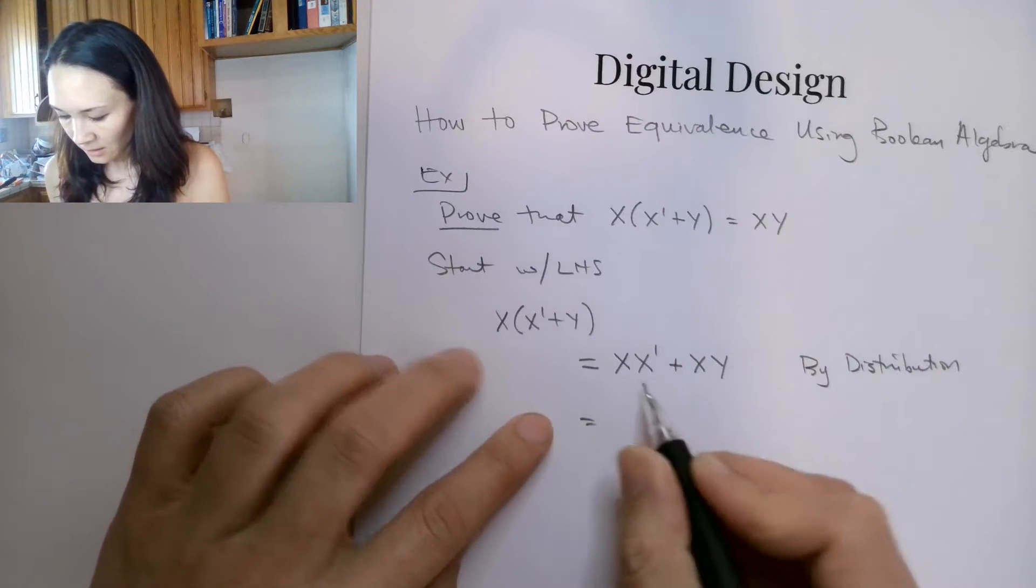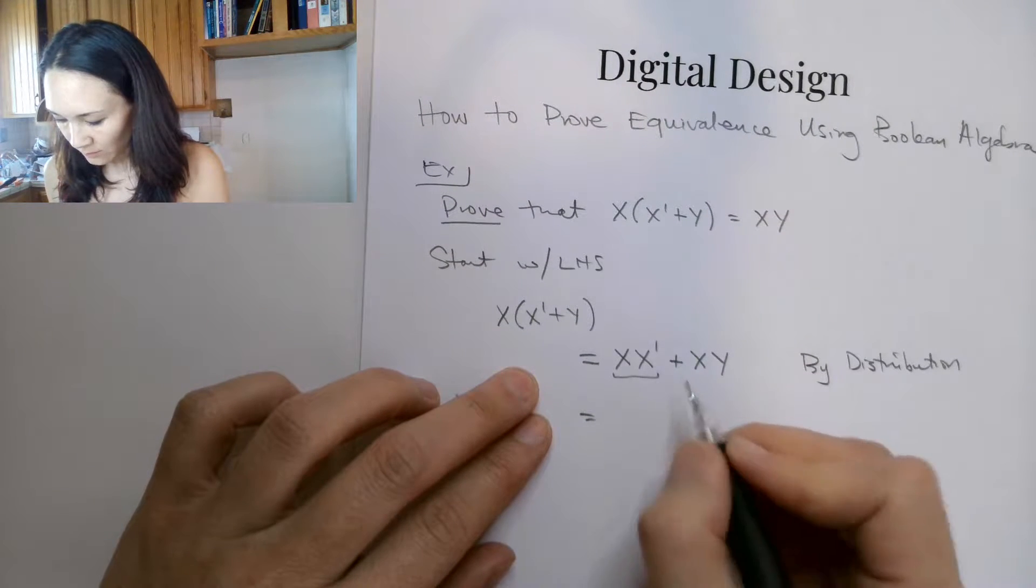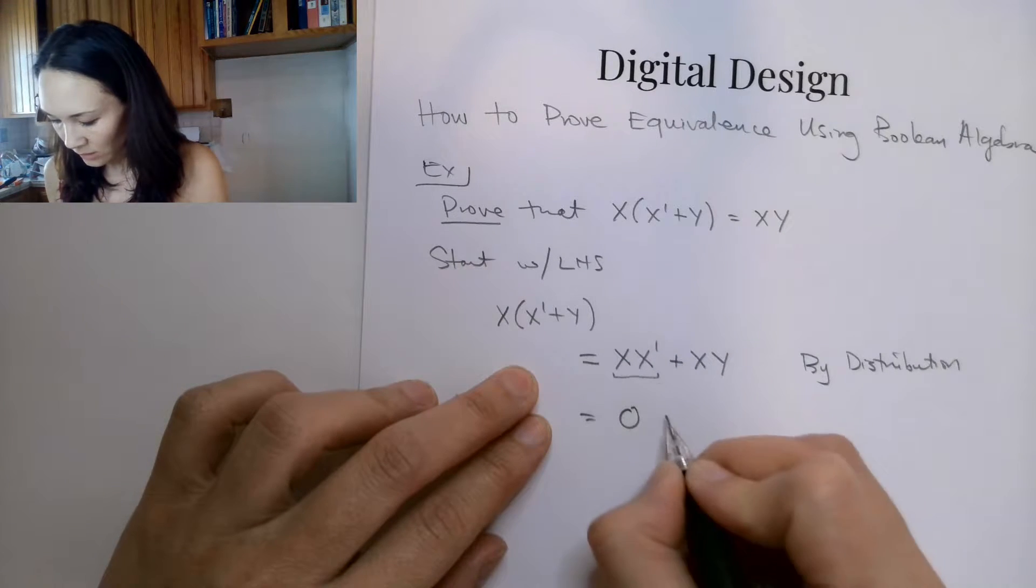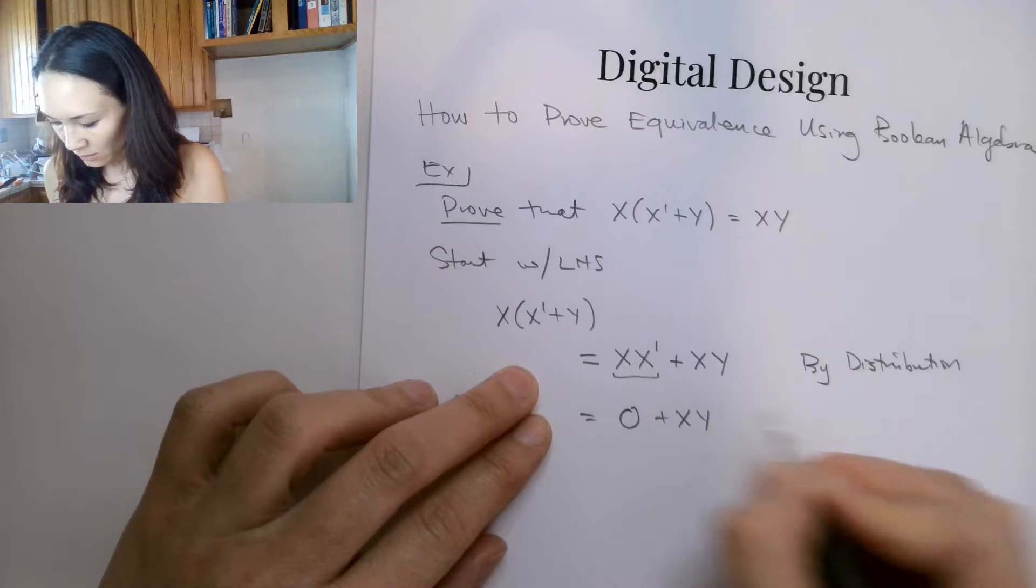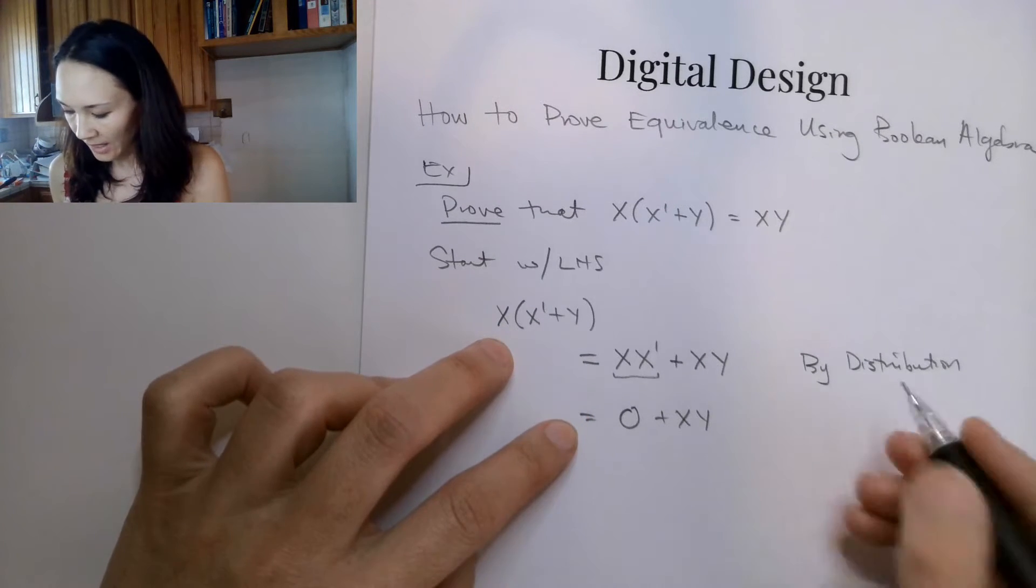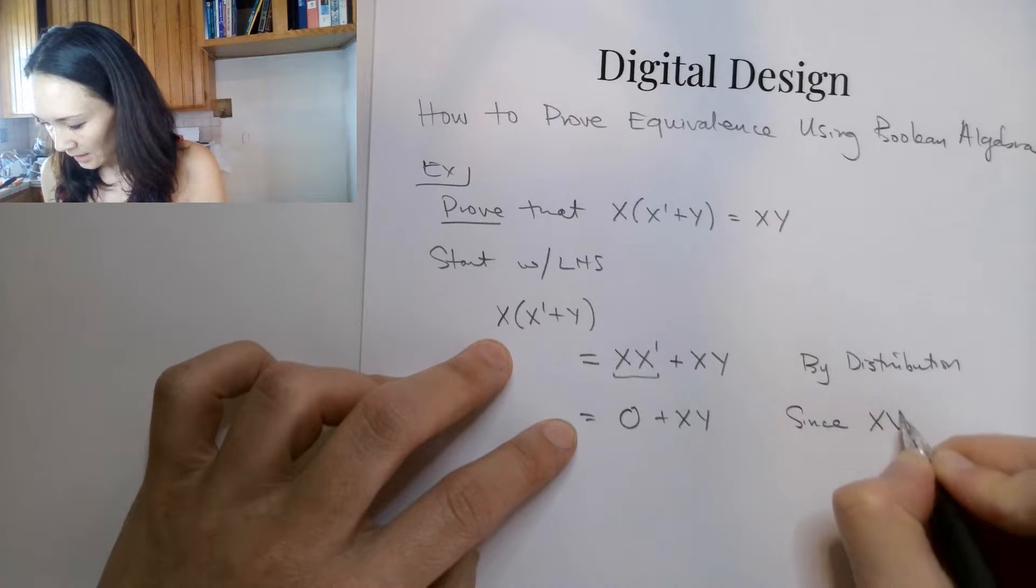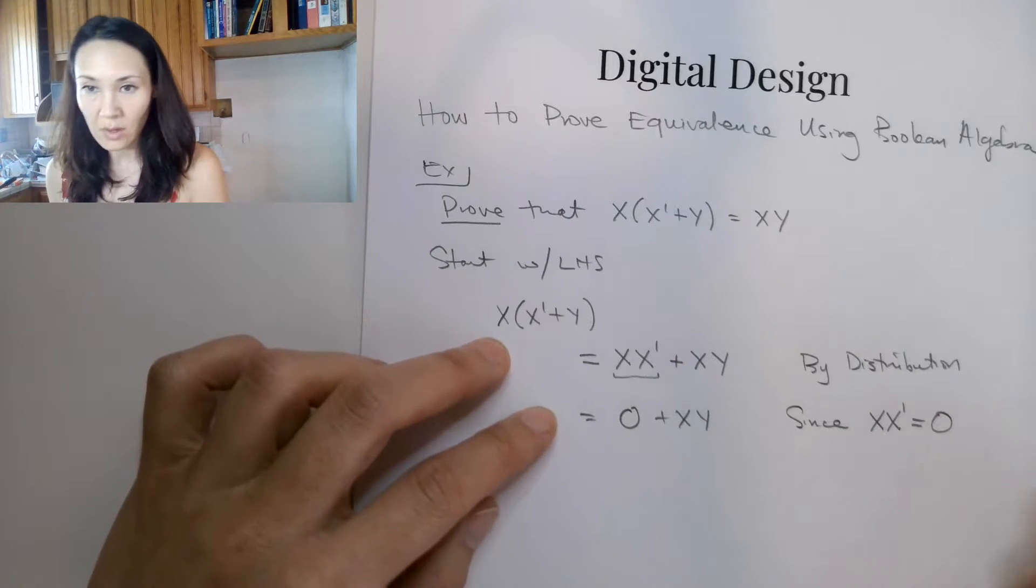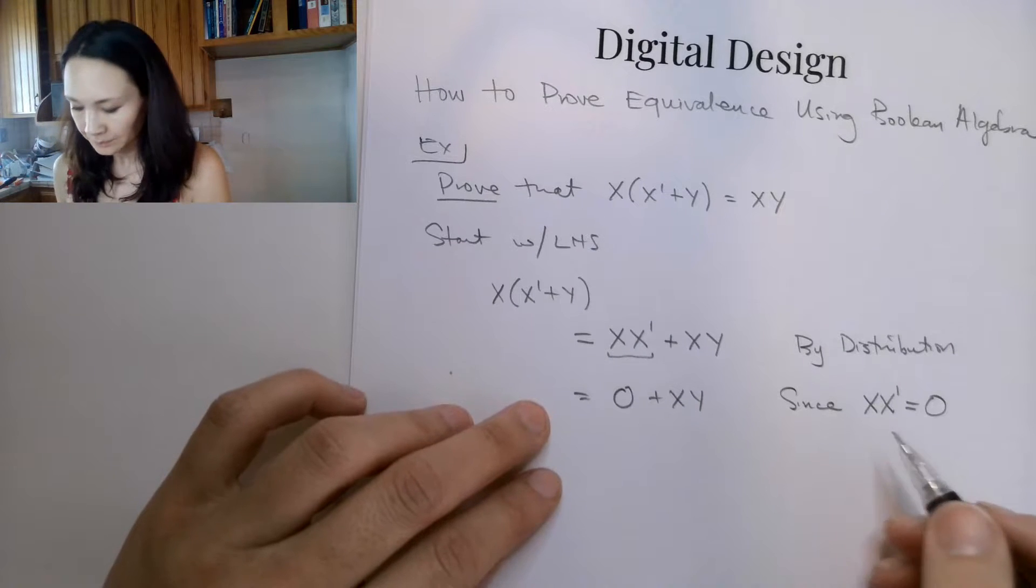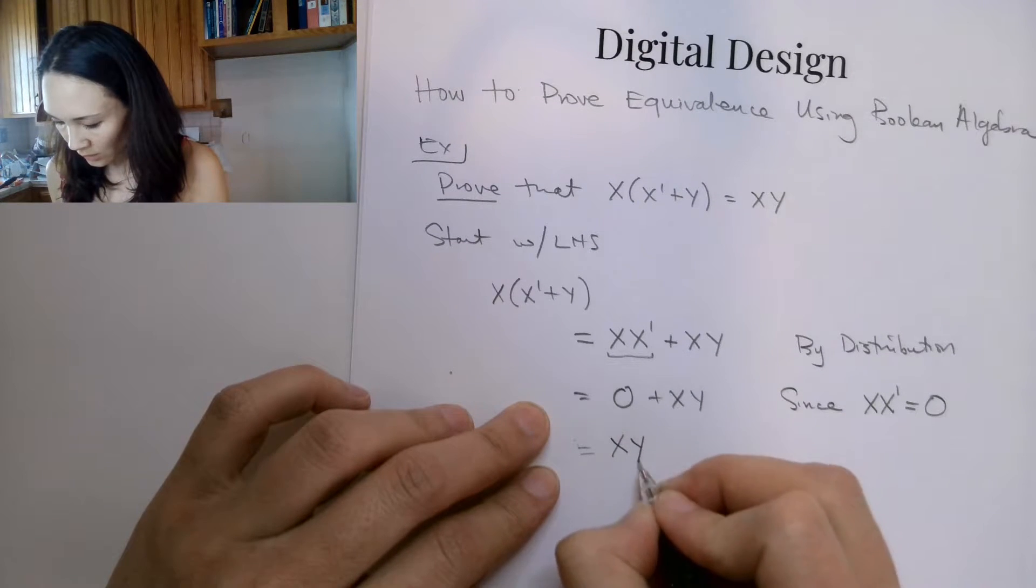And then this now is equal to this term here. Anytime we and something with its complement, that's just going to be zero. This thing stays here. So the difference between this line and this line, the theorem that I applied was, since x times x naught is equal to zero, this is one of the basic laws of Boolean algebra. From here, I can say this is just equal to xy.